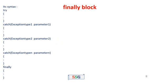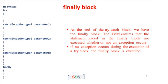The next topic is the finally block. One more block is available in the try-catch structure — that is the finally block. Its syntax is: try block, followed by a set of catch blocks (catch 1, catch 2, up to catch n), then the finally block with its set of statements. The finally block should be defined at the end of the catch blocks. The JVM ensures that the statements placed in the finally block are executed whether or not an exception occurs. If you want certain statements to always execute, define them in the finally block.